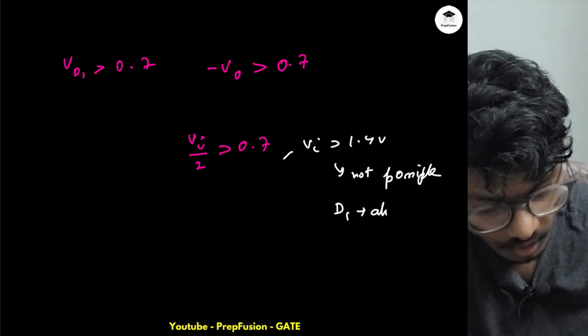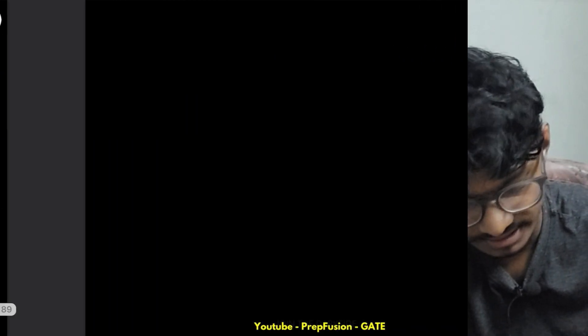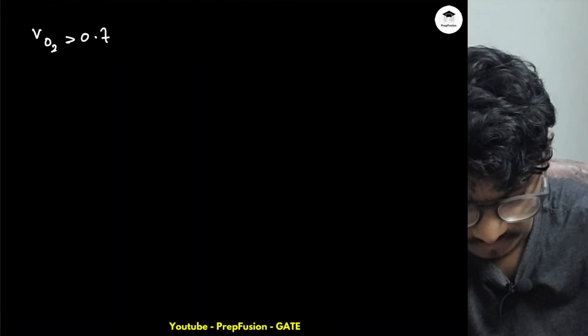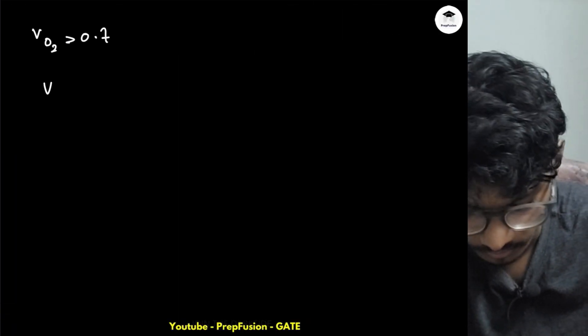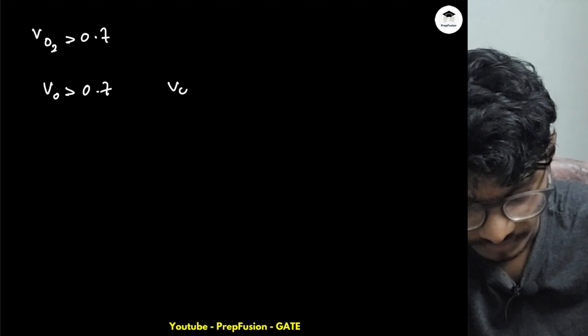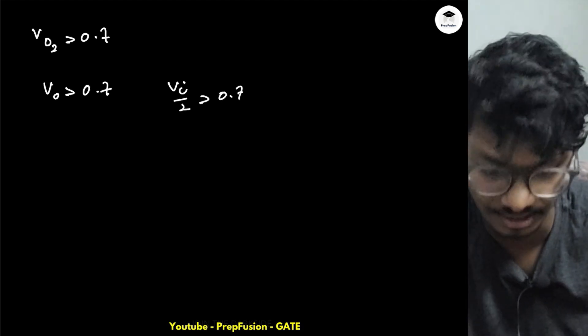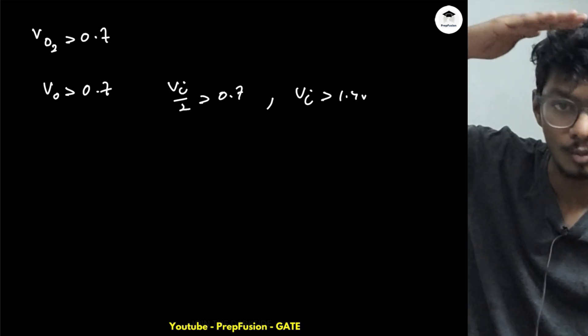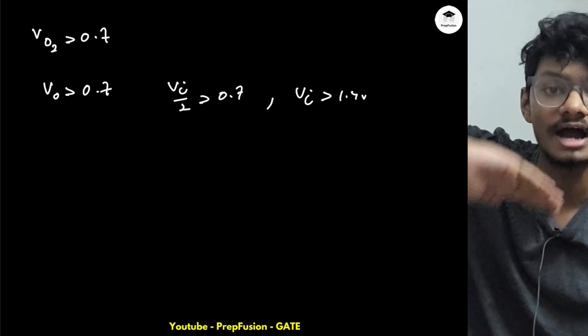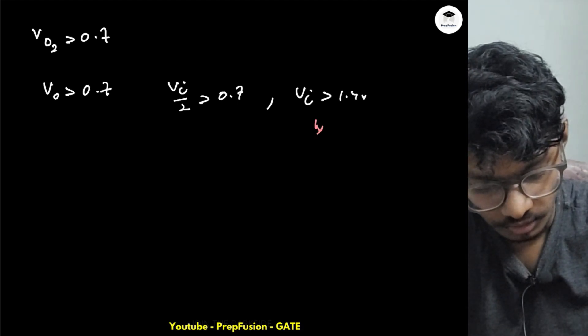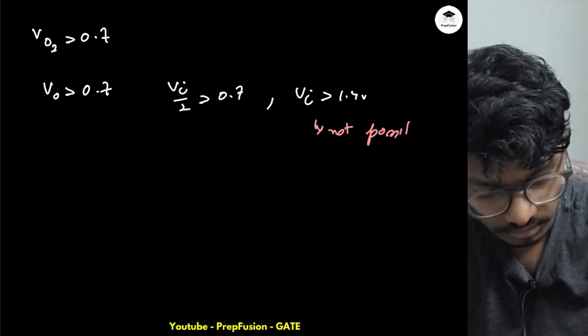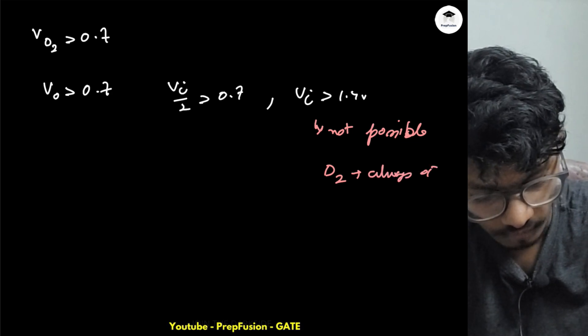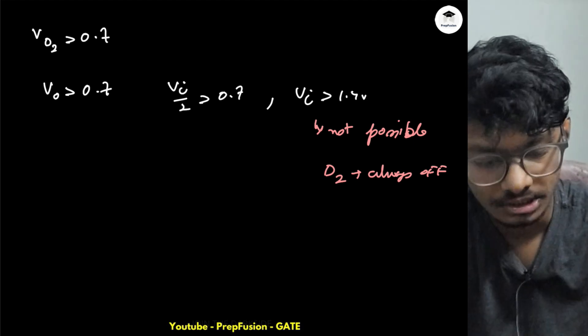Let's go to the next case. For D2, VD2 needs to be greater than 0.7. VD2 is plus Vo, so Vo needs to be greater than 0.7, or Vi/2 needs to be greater than 0.7. Again, Vi has to be greater than 1.4 volts. Again it is not possible—Vi cannot go below minus one volt and cannot go over one volt. Not possible, so D2 is also always off.